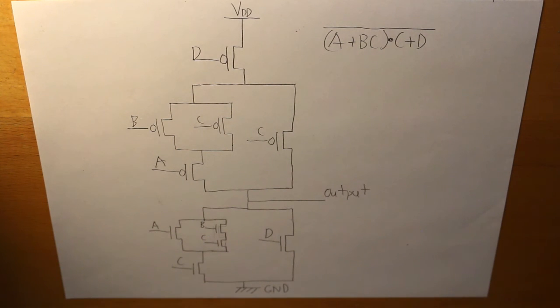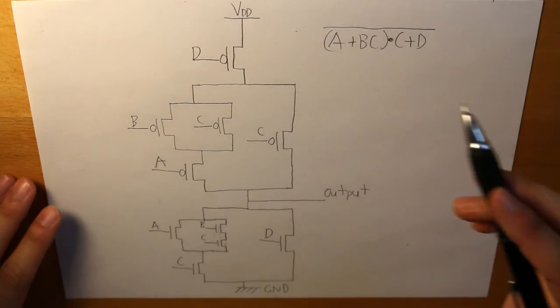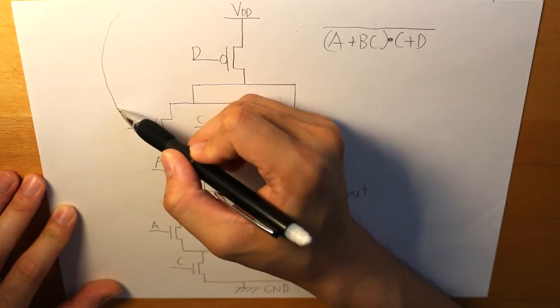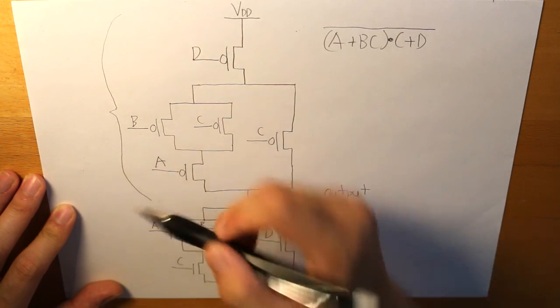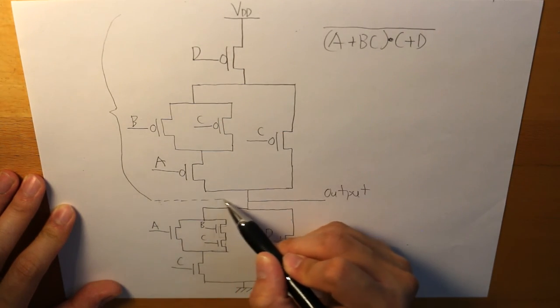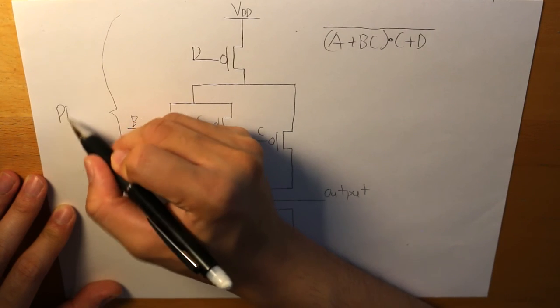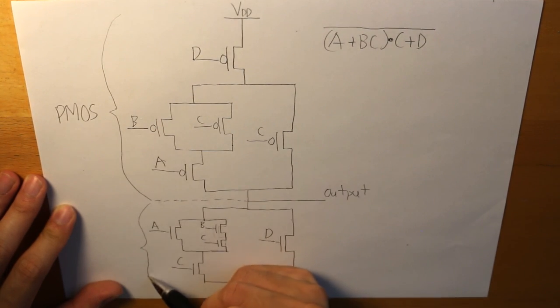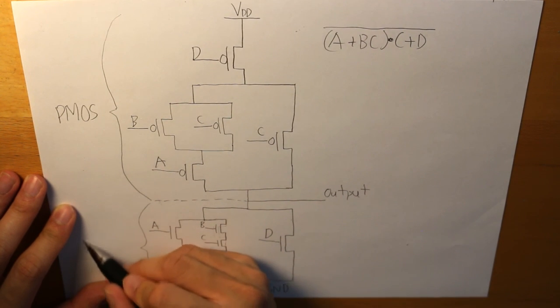So this is the final layout for our CMOS and I just want to quickly highlight that from here to here is our PMOS and from here to the ground from the output to the ground that would be our NMOS.